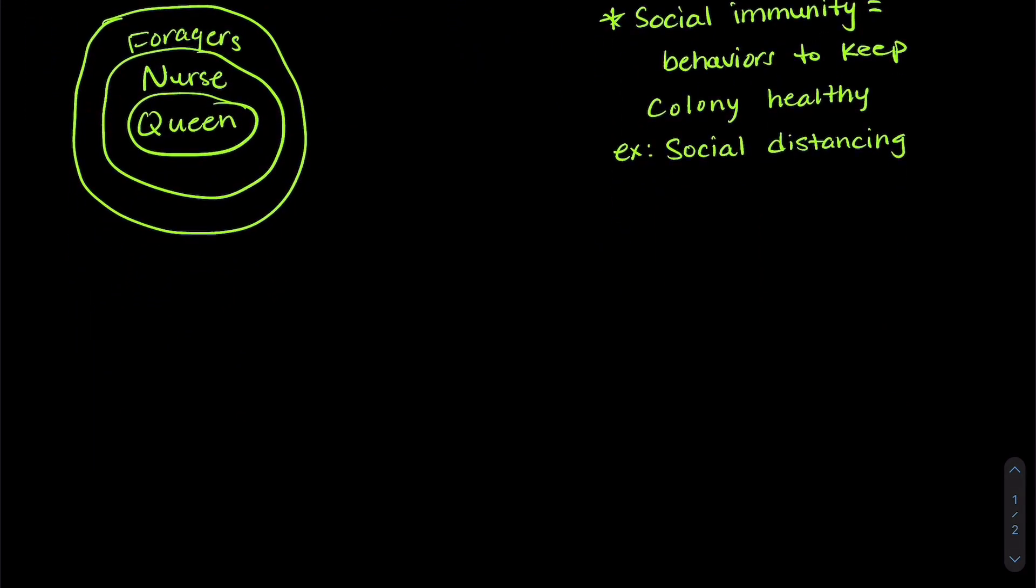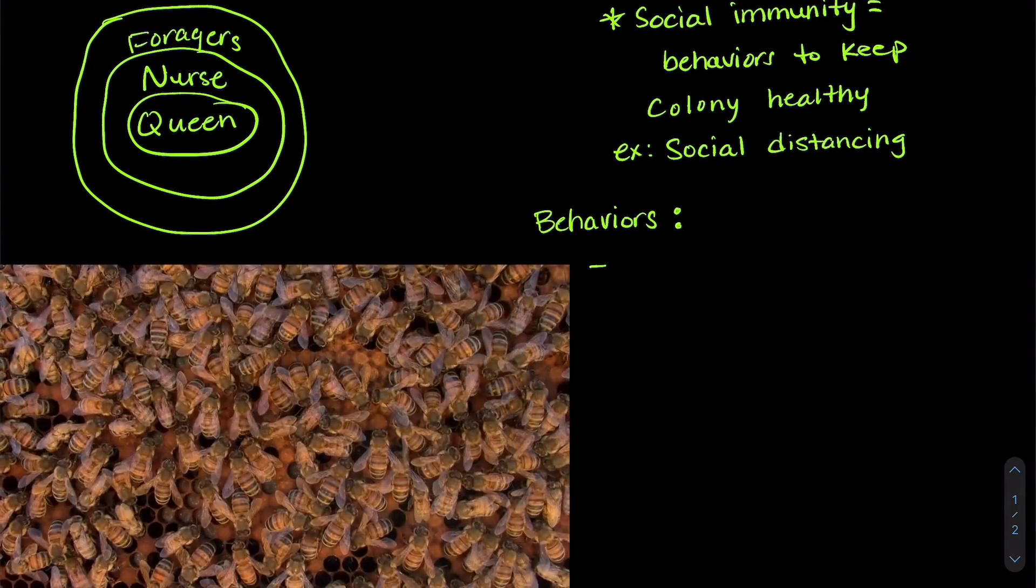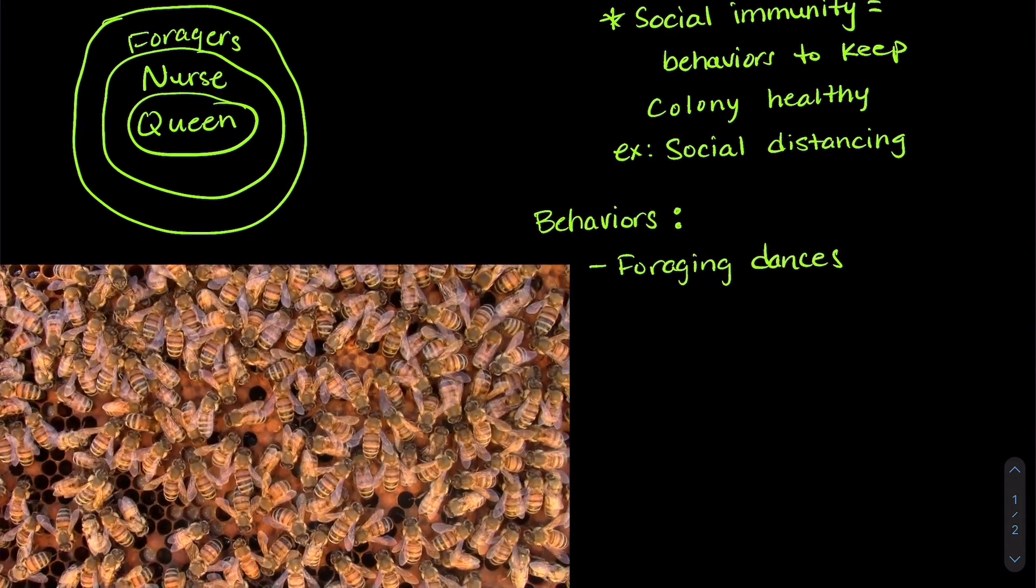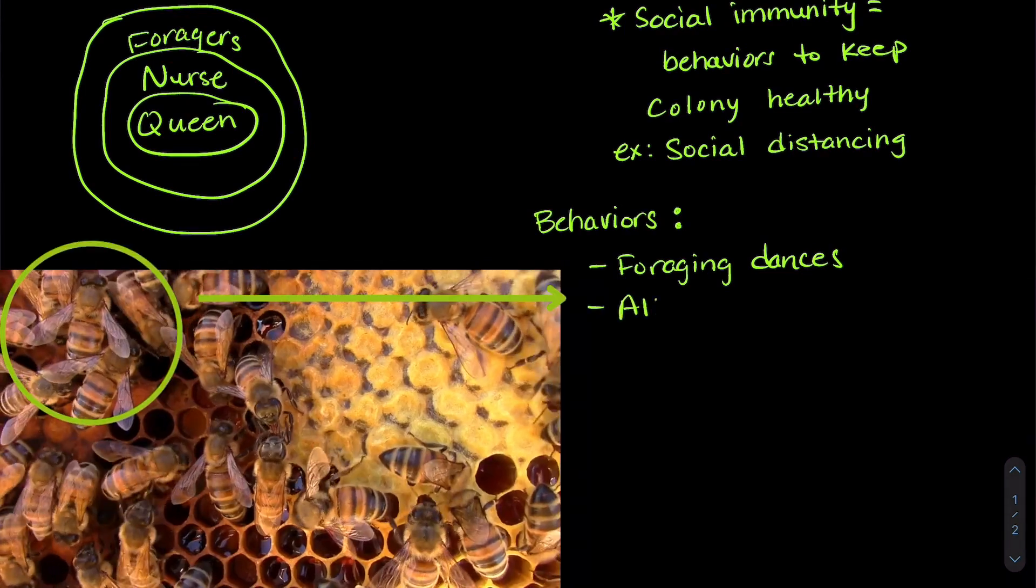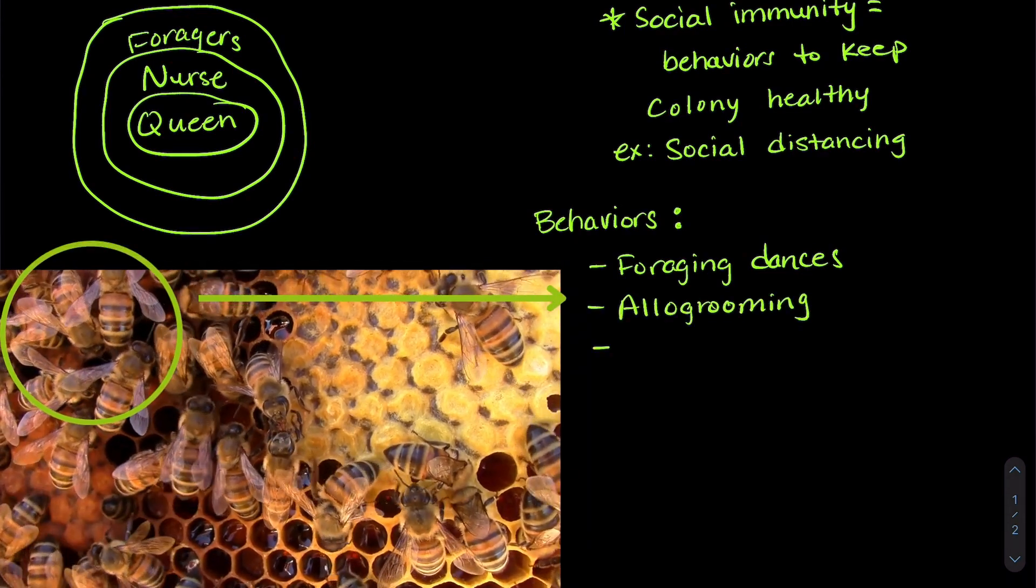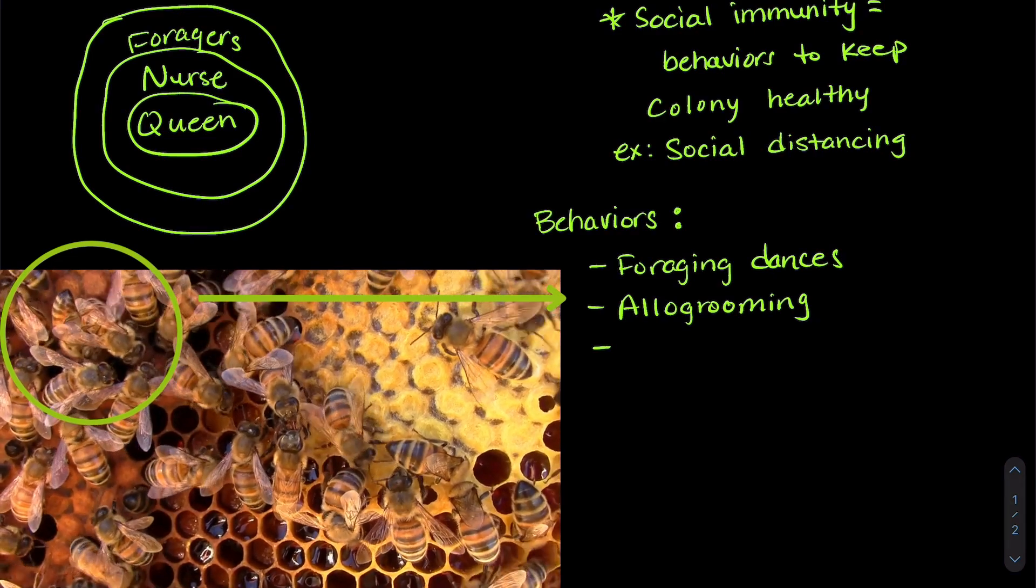There are four behaviors in bees that researchers think might be related to social immunity. The first are foraging dances, which show other foragers where to find food. The second is allo grooming. This is a form of grooming that removes and kills parasites on other bees.